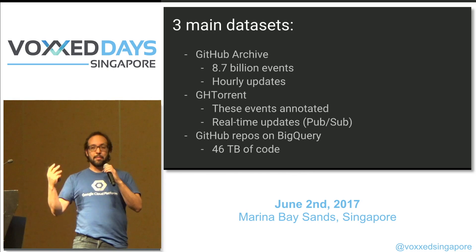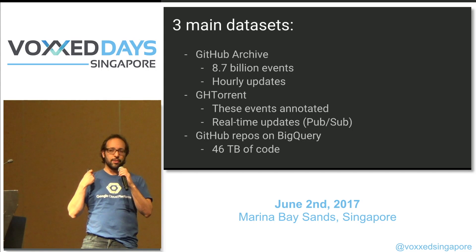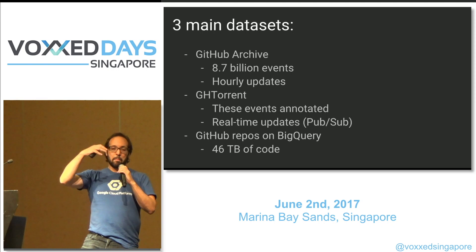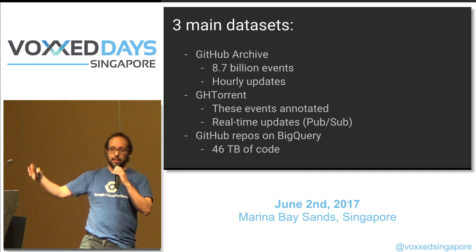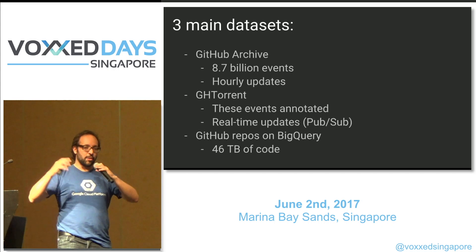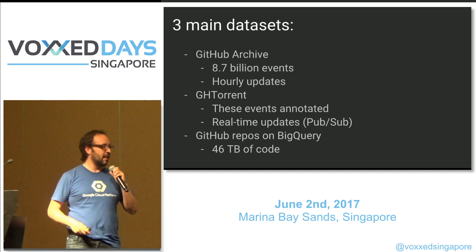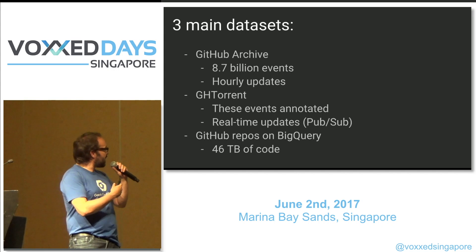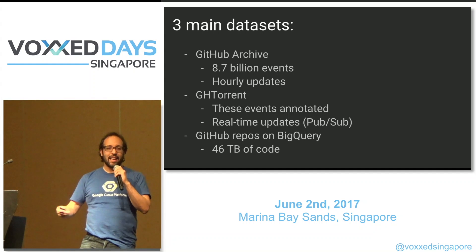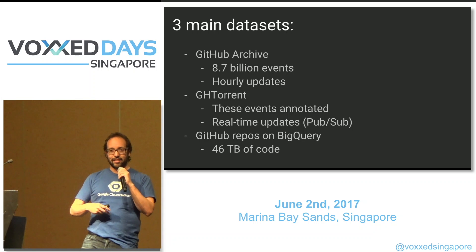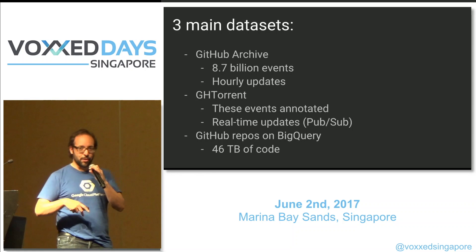Recently I started using another project, GH Torrent. GH Torrent basically covers the same data but goes further — it annotates it and adds more tables with more metadata so you can traverse the graph of metadata that each project and each user offers. And we also have a full copy of most open source files living in GitHub so we can analyze the code itself.